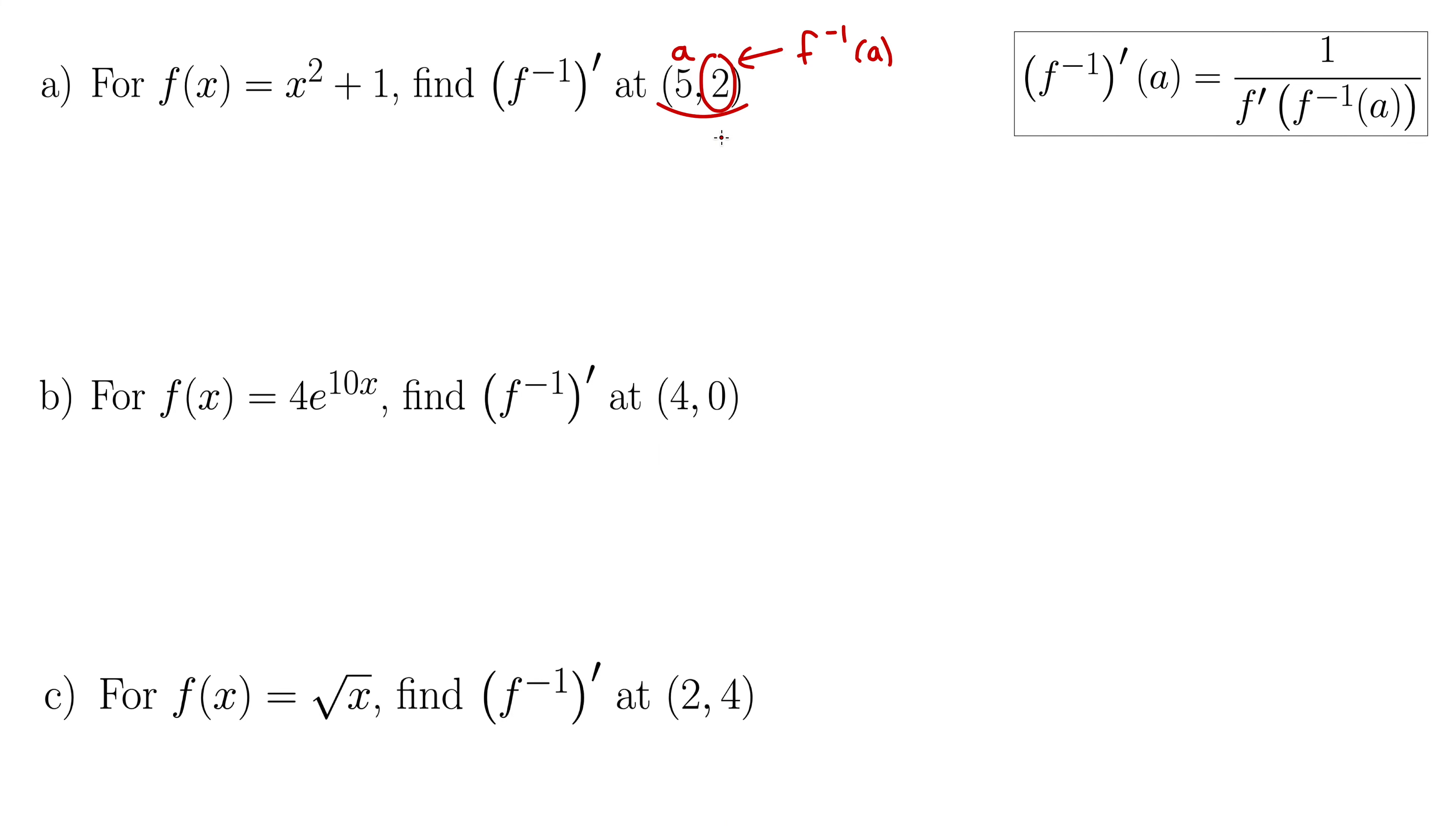So that's how you nail down f⁻¹(a) if a point is given. If a point is not given, you have to do a little bit more work. But in this particular series of examples, all the points are given. So we're in luck there. So we have our a, which is 5, and our f⁻¹(a), which is 2.